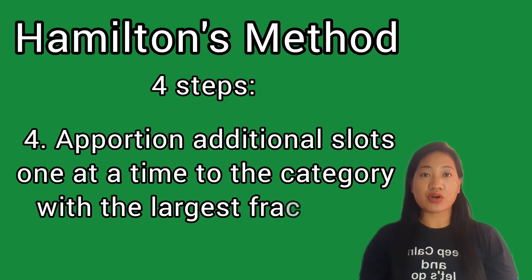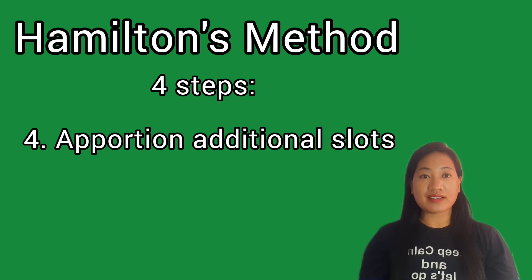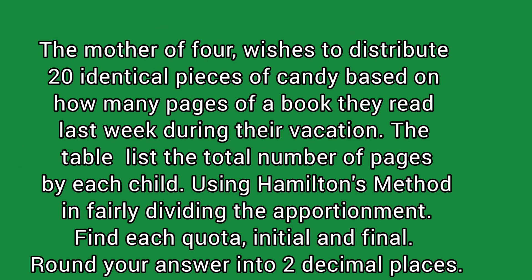For us to understand more, let's go to the example. A mother of four wishes to distribute 20 identical pieces of candy based on how many pages of a book each child read last week during their vacation. The table lists the total number of pages read by each child. Using Hamilton's method to fairly divide the candy, find each quota — initial and final — rounded to two decimal places.